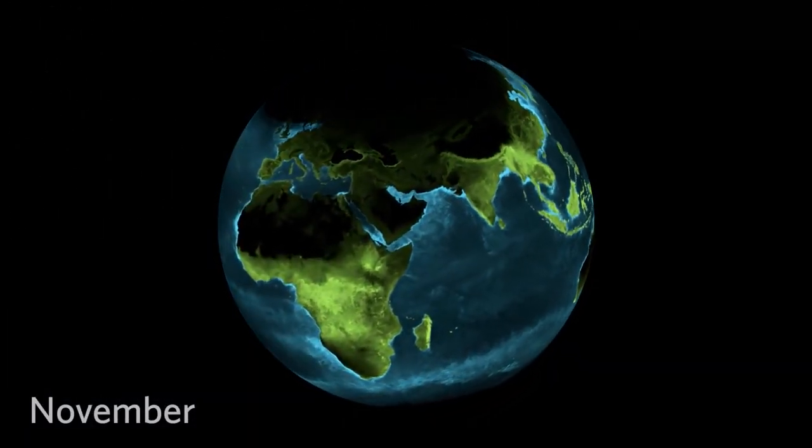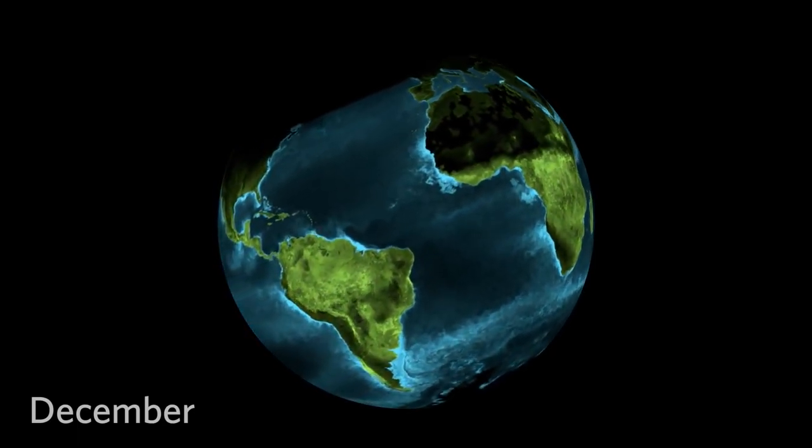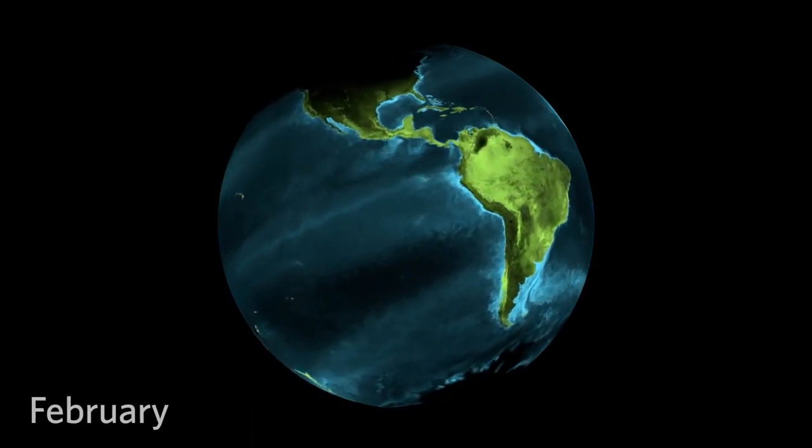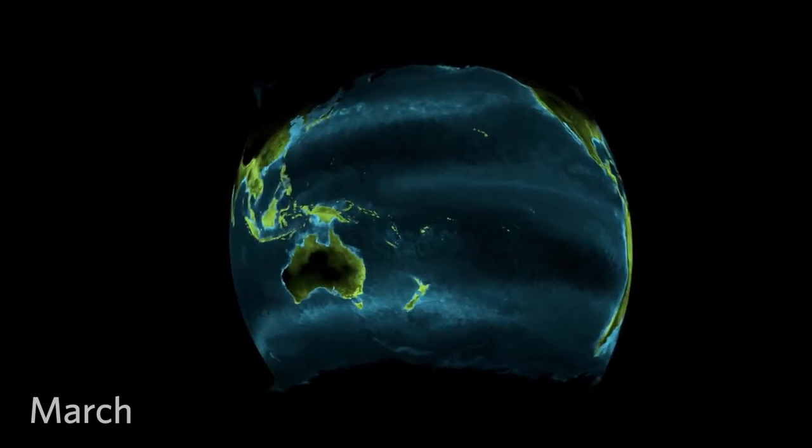Earth-orbiting satellites measure the amount of carbon dioxide absorbed by these primary producers. Bright regions on this map show where they devour the most carbon dioxide, turning light from the Sun into oxygen and natural sugars.